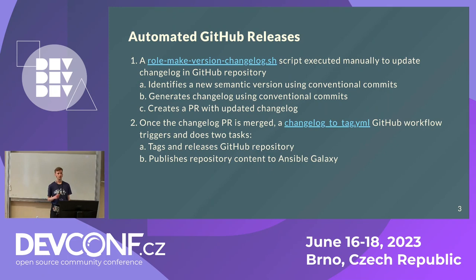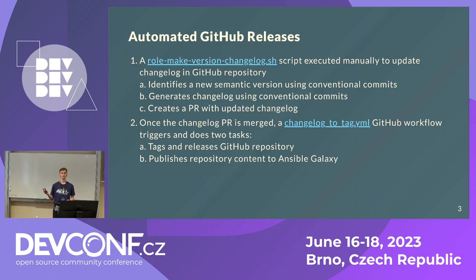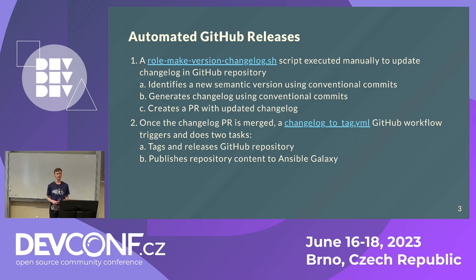To begin with, about how we release content on GitHub itself: we have a script that developers launch when they need a new release. This script does three things. First, it uses conventional commits format to decide what the new semantic version should be and to generate a changelog for the new release. After this, it pushes a PR with the updated changelog and new version to GitHub for review. After a developer merges the PR, a workflow runs automatically that creates a Git tag, a GitHub release, and publishes the repository content to Ansible Galaxy.